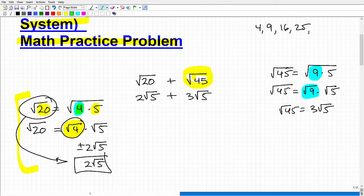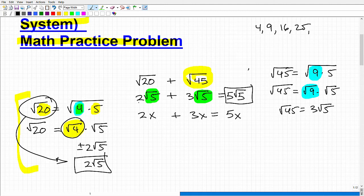The next thing you want to understand about working with square roots is that if you have the same exact radical—the square root of 5 and the square root of 5—this is exactly like having like terms in algebra. If you have 2x plus 3x, I would write this as 5x. I have 2 square roots of 5 and 3 square roots of 5, so in total I have 5 square roots of 5.